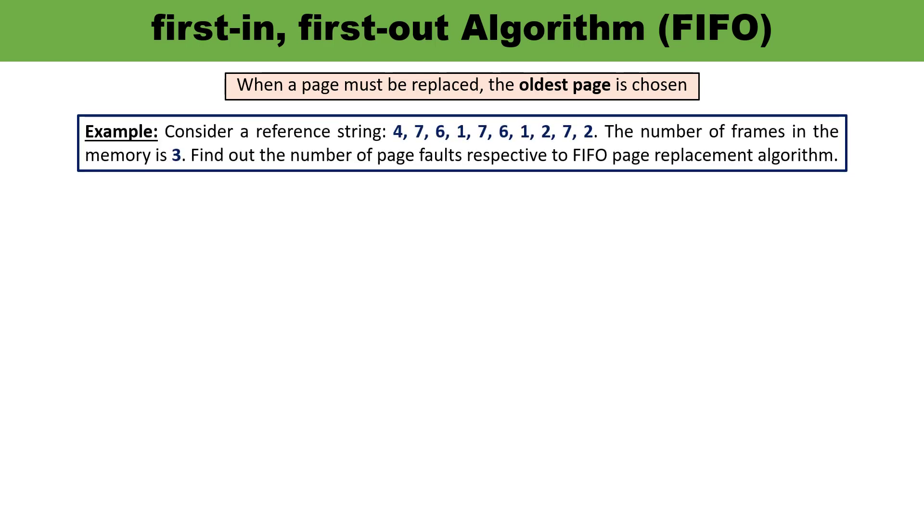This is an example where a string is being given and the total number of frames in the memory is three. You have to determine the page faults respective to first in first out algorithm. The string is given in the question but you have to be concerned about the number of frames.